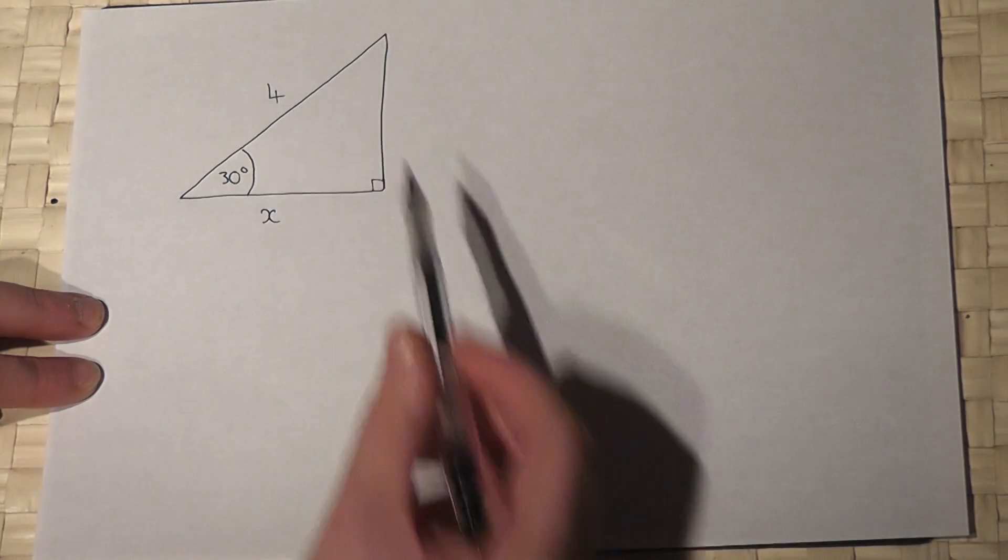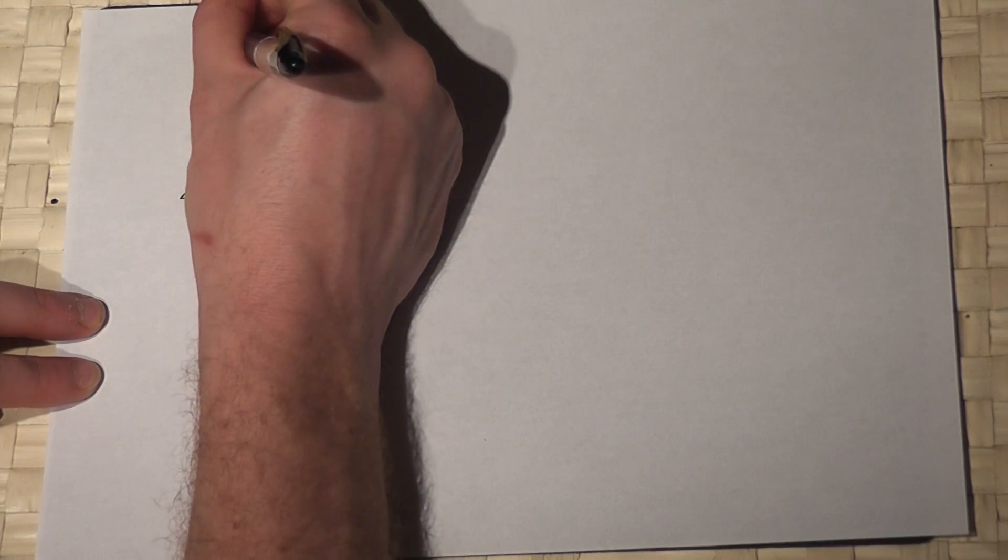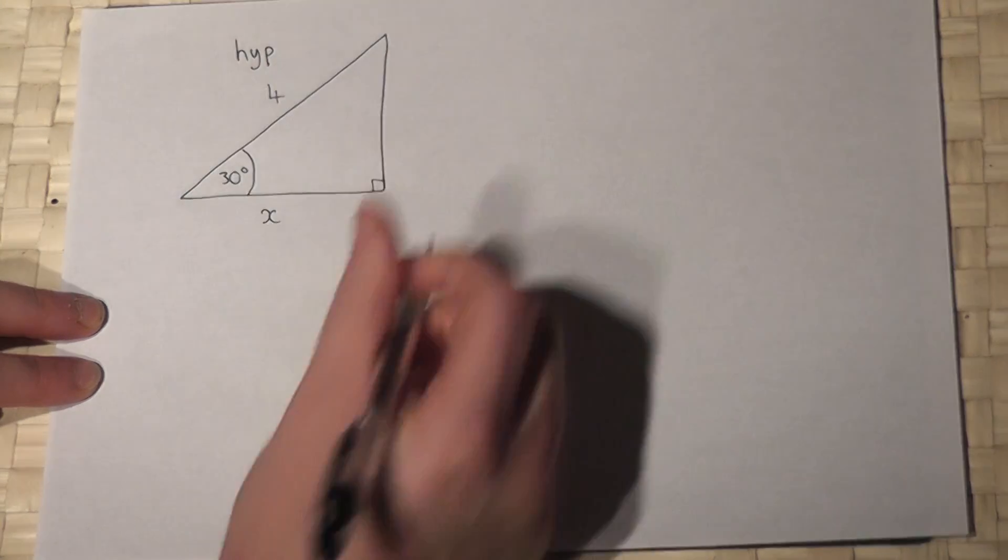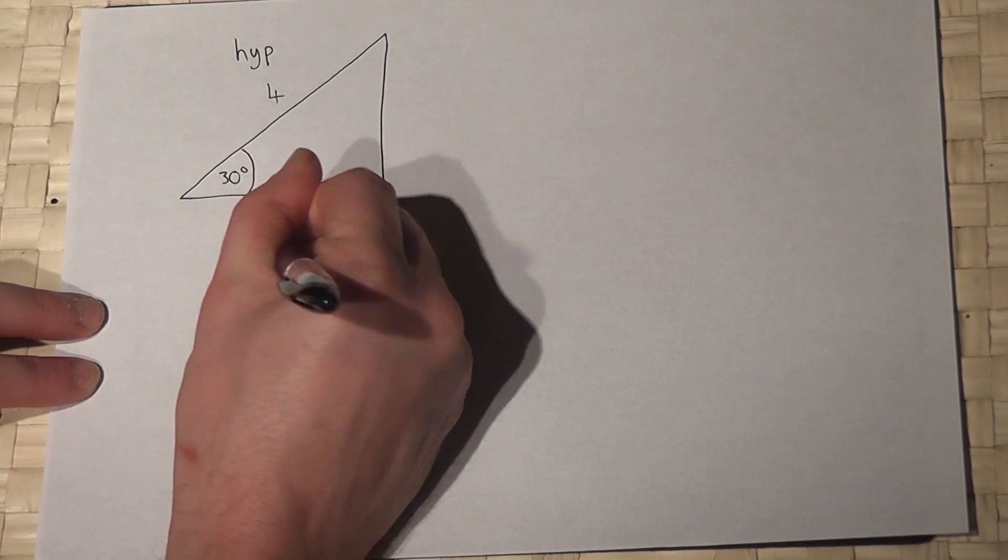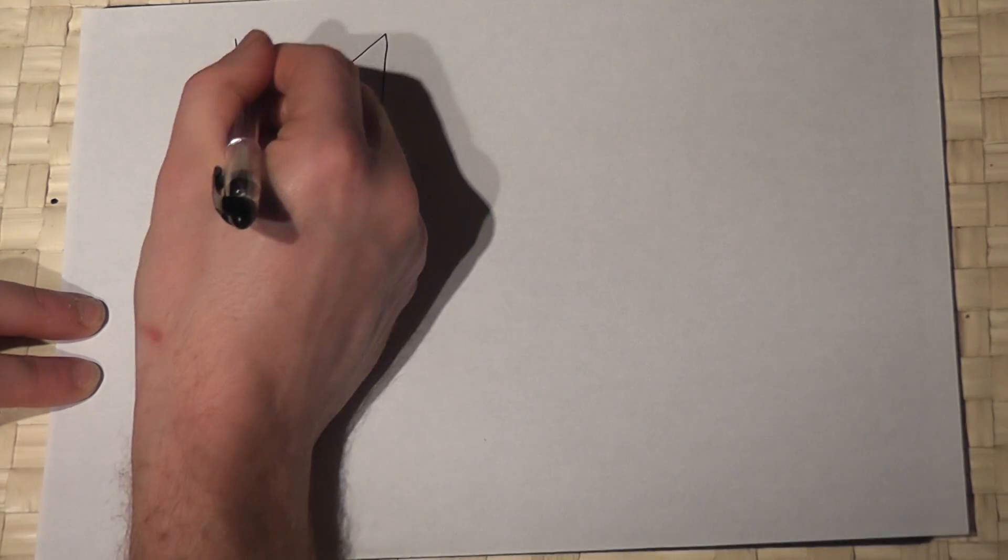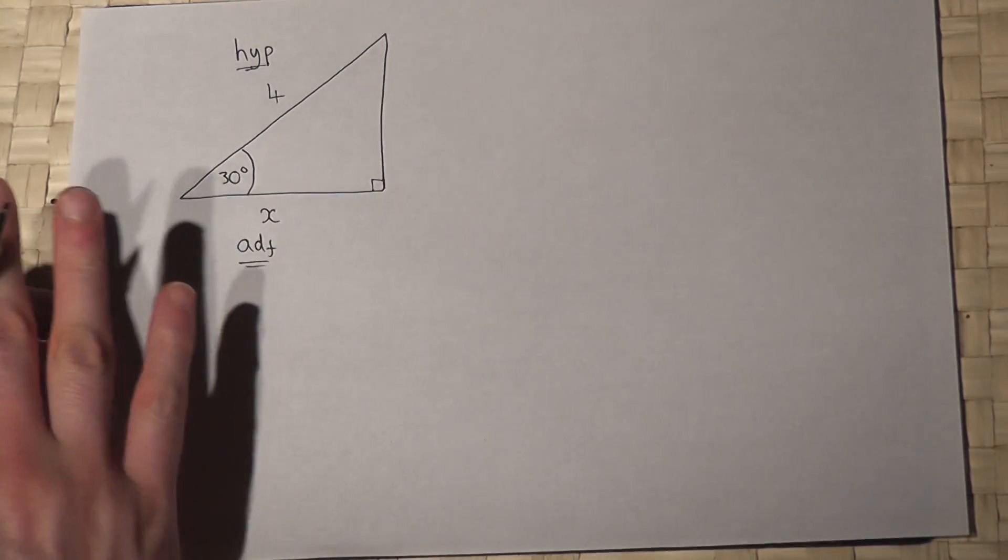The side opposite the right angle is the hypotenuse and the side which is adjacent to the angle is called the adjacent. In this question the opposite is irrelevant.